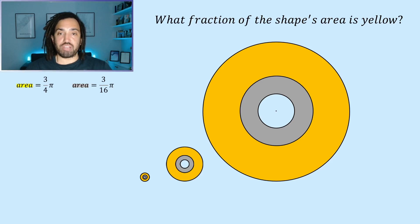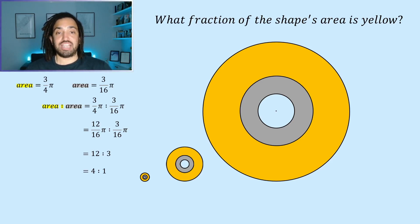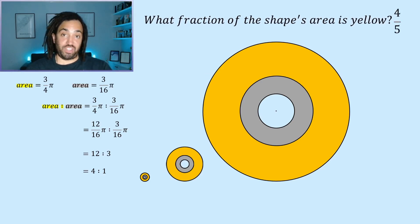So the yellow to grey ratio is three quarters pi to three sixteenths pi which is equivalent to twelve sixteenths pi to three sixteenths pi. Simplifying we have twelve to three which is four to one so the yellow area is four times that of the grey area and the yellow area is four parts out of a total of five parts and therefore the answer to today's question is four fifths.